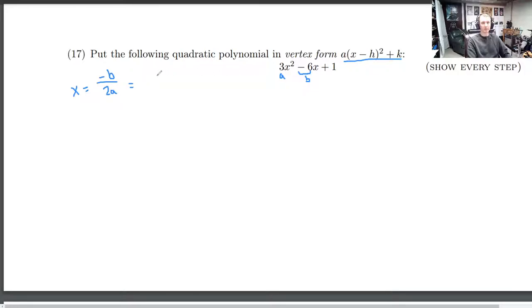Then the vertex is always going to be at the x coordinate, the opposite of b over twice a. So for us, that's the opposite of negative 6, so it's 6 over 2 times a, so 2 times 3, which is 6. Okay.